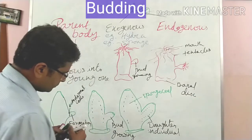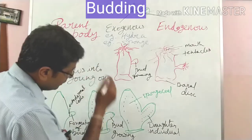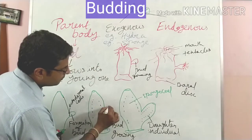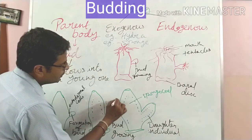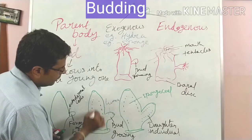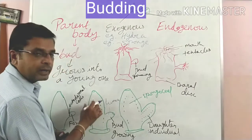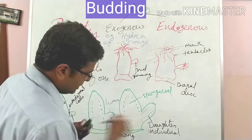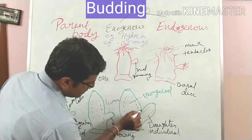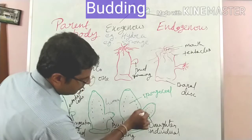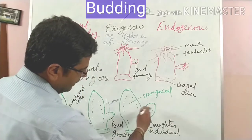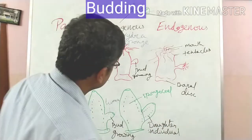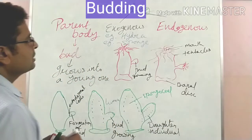After some time, a lumen forms in the bud which connects into the cavity of the parent body. Then constriction takes place at the base of the bud, it detaches from the parent body and leads into individual life. This is called exogenous budding.